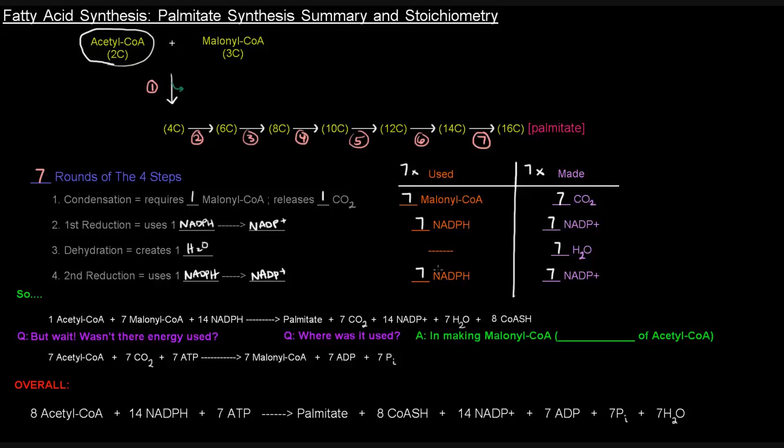We also used 14 NADPHs. What did we get in the products? Well, we got a palmitate, seven carbon dioxides, 14 NADP-pluses, seven waters, and all the coenzyme A's were knocked off. So there was one on the acetyl-CoA and then seven on the malonyl-CoAs, so that's eight coenzyme A's.